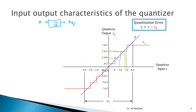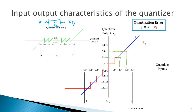If you subtract the input and output signals and sketch the error, you get a diagram showing the relation between input and quantization error. Whenever the error passes through zero, we are at an exact quantization level. Once you exceed the maximum NP, the error grows dramatically beyond the valid range of 2NP.